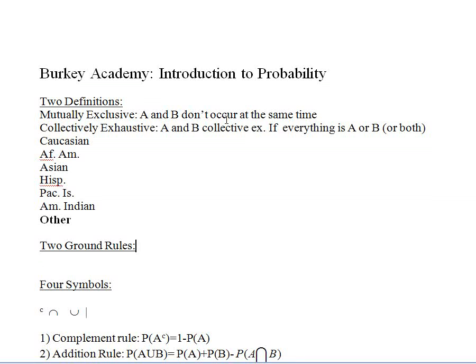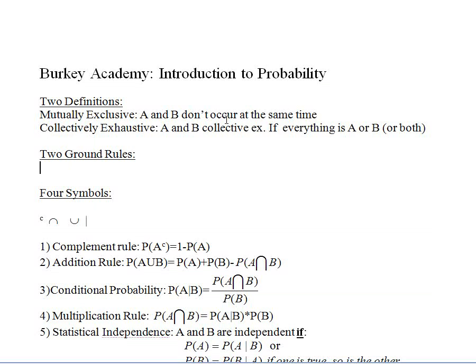Now two ground rules that we need to talk about. Two ground rules about probabilities. When we talk about probabilities, probability is always going to be a number between 0 and 1. If something has a probability of 0, that means that it cannot happen or does not happen. A probability of 1 means that it is certain to happen. It has to be absolutely true.